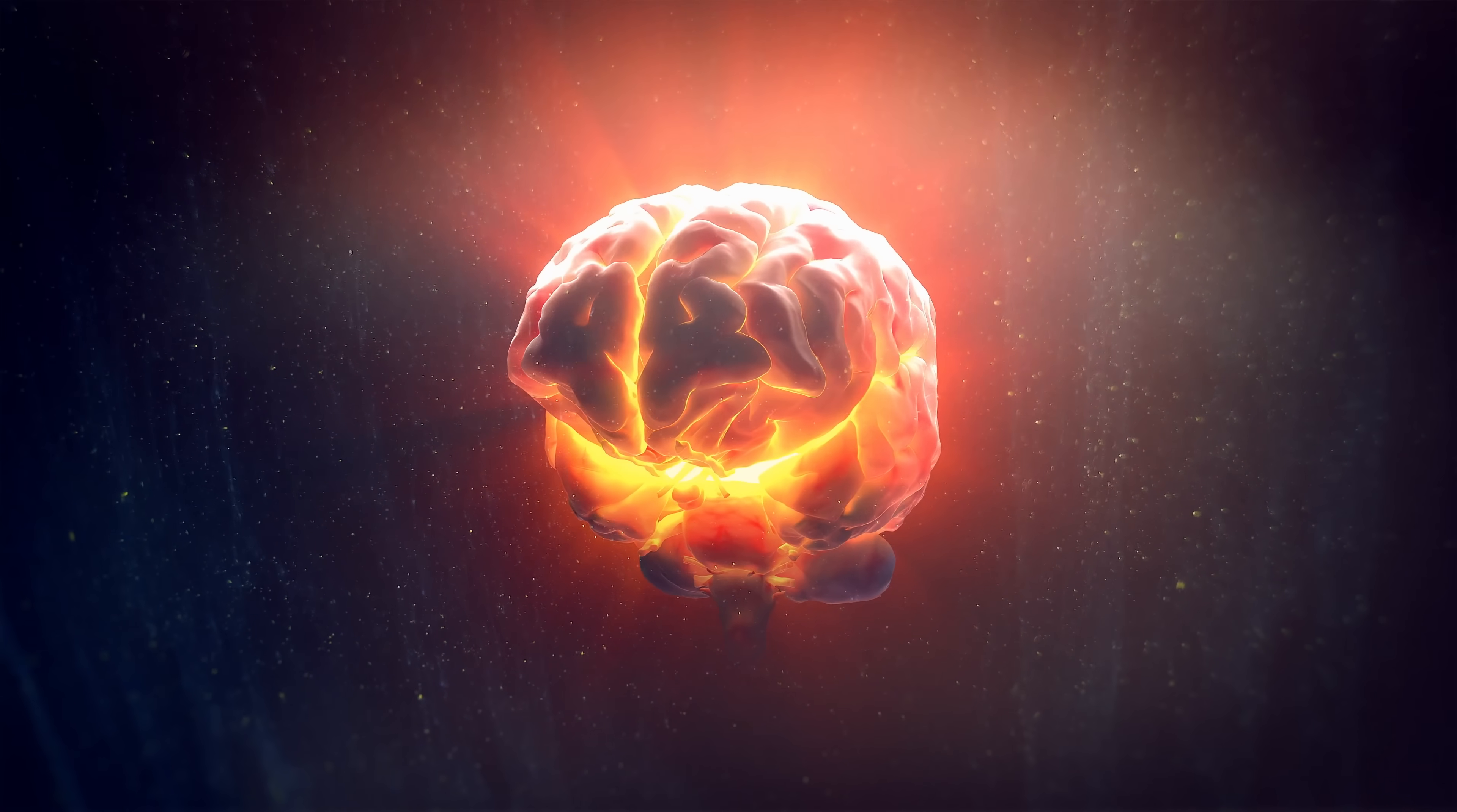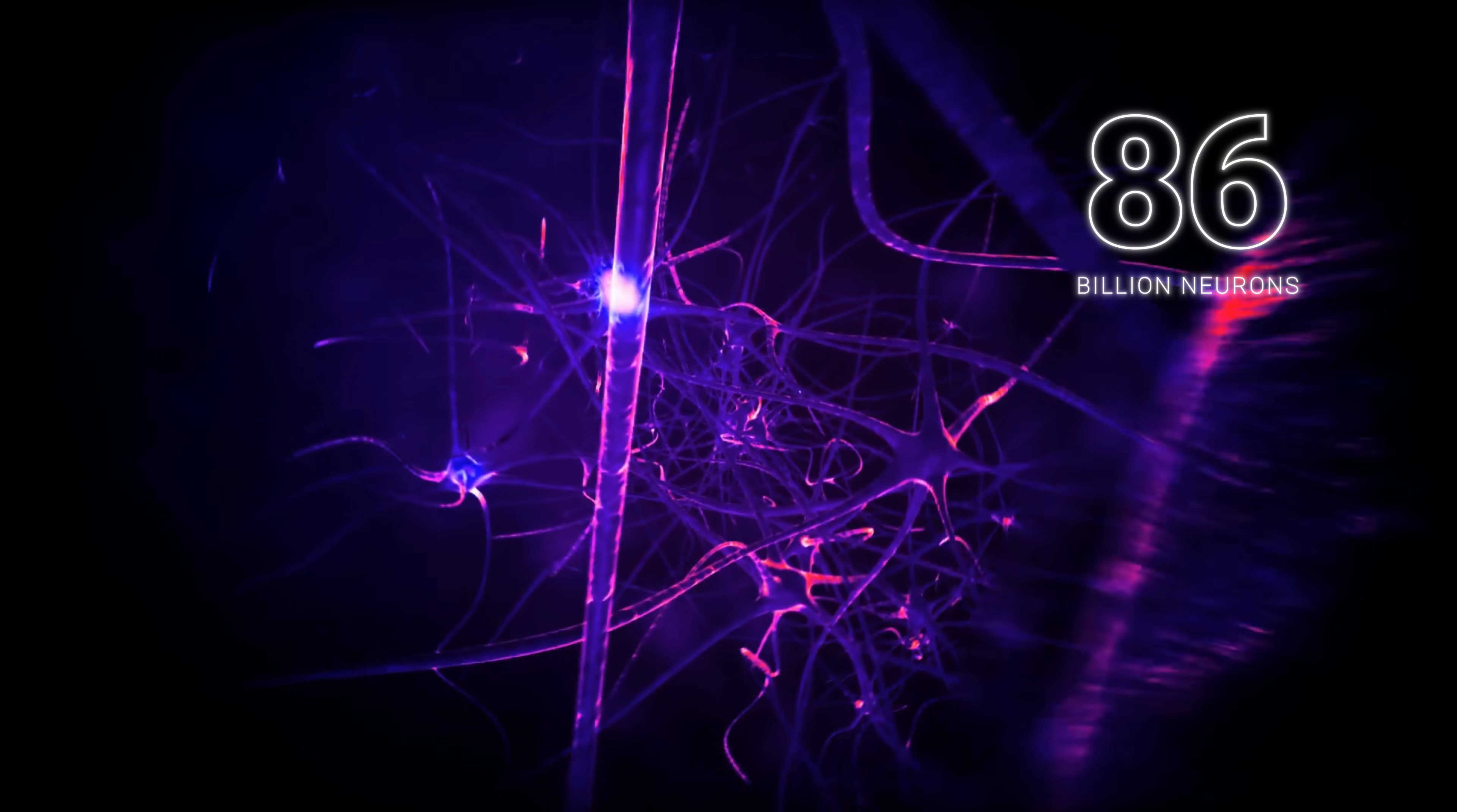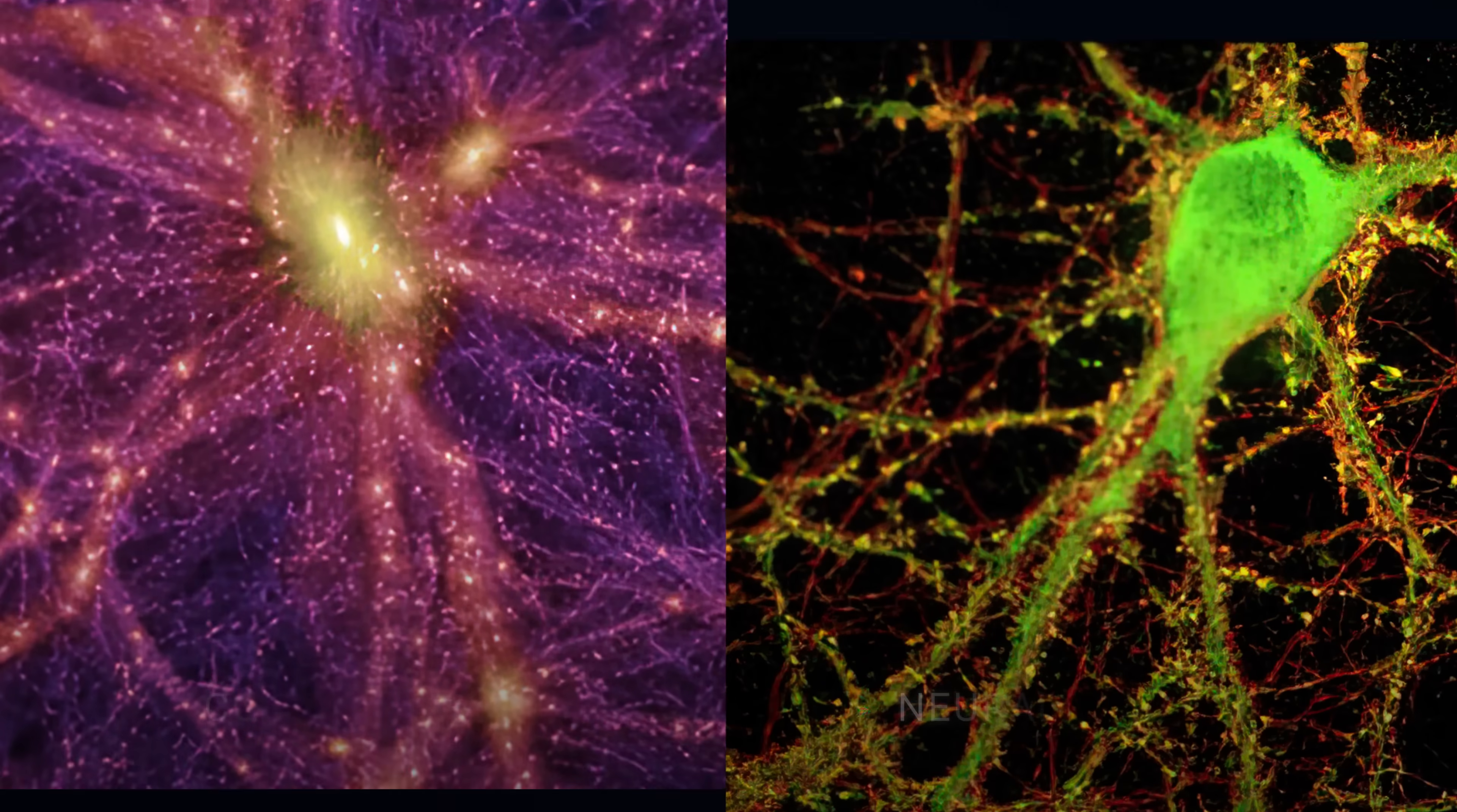Now let's travel to a place equally complex and impressive, the human brain. Composed of some 86 billion neurons, each neuron in the brain is connected to thousands of other neurons, forming a network of unprecedented complexity. The striking similarities between the cosmic web and neural networks are more than a poetic metaphor.